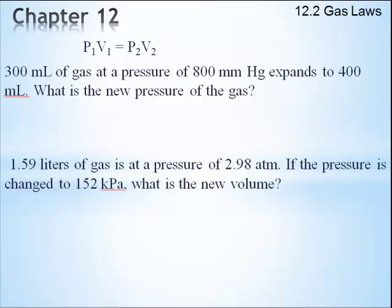So we've got that formula up there. So let's go ahead and take my pressure, which is 800 millimeters of mercury, and I'm just going to write millimeters there, times 300 milliliters. And we don't know what P2 is going to be, but we know that the new volume is going to be 400 mL.